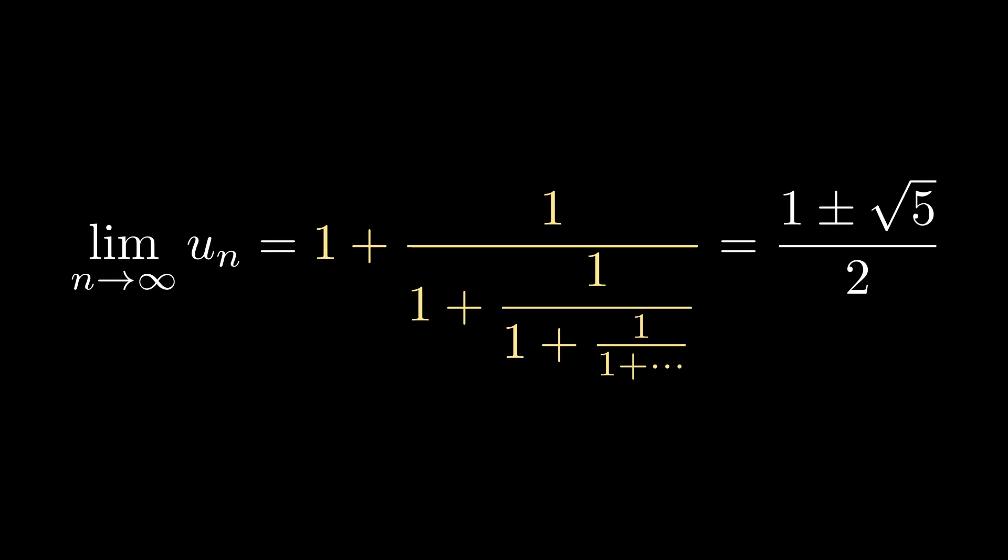Something that we can immediately notice is that our fraction has no negative components, which means it would be impossible for it to yield a negative solution, which means we can discount the plus or minus from our solution, leaving us with the value of this fraction being exactly 1 plus the square root of 5 all over 2.